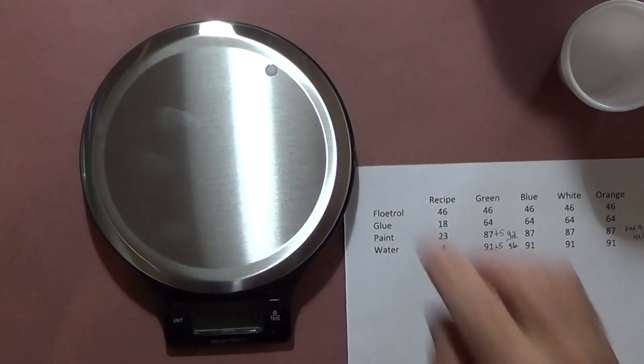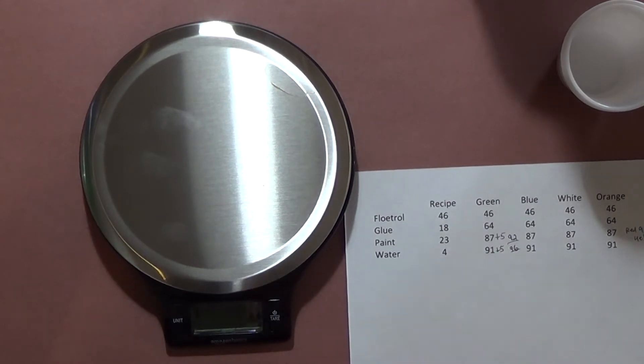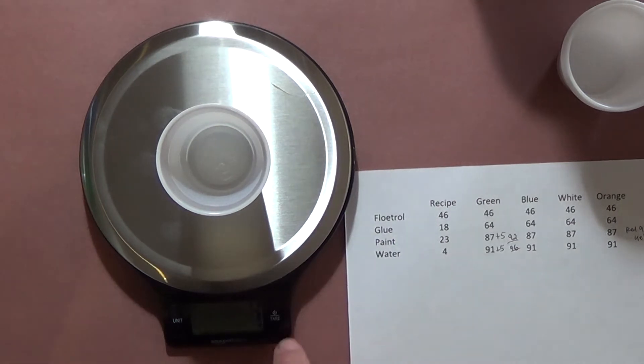I did one color and I'm going to make an adjustment because this scale, this new scale, it times out real quick. In the middle of doing my mix it timed out on the weight. I'm thinking about this, and this is probably an easier way—instead of doing the totals up here, I'm just going to put my cup on here then I'll tare my scale down to zero.